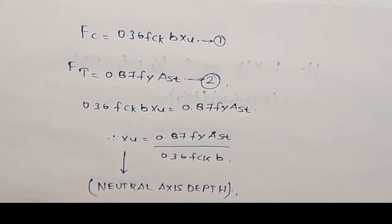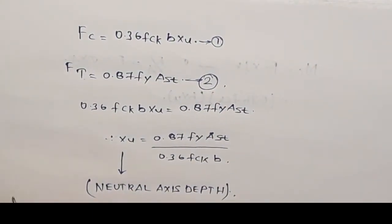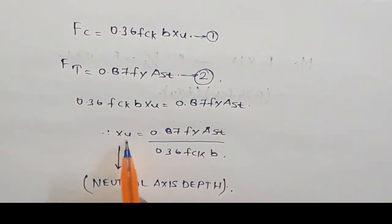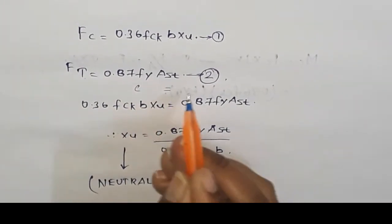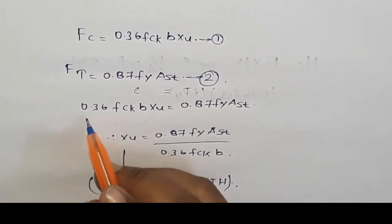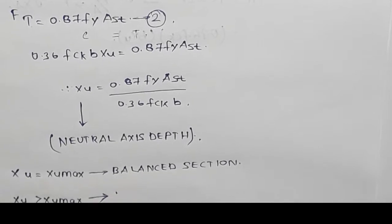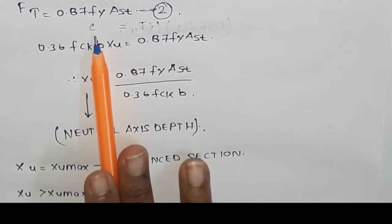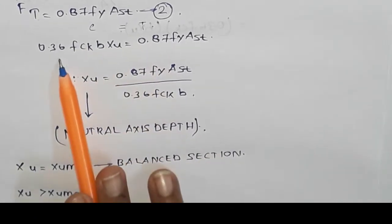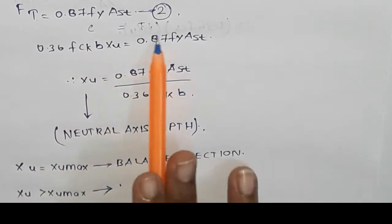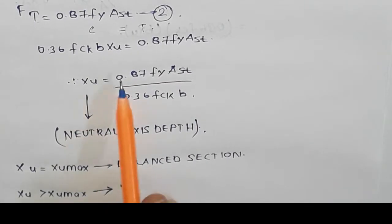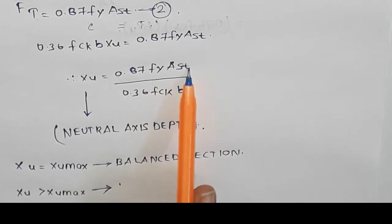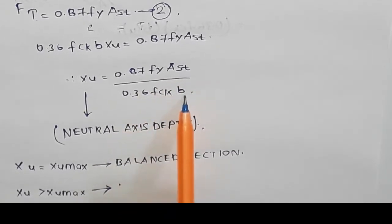The neutral axis does not experience either compressive or tensile forces. Therefore, to calculate XU, I equate both the compressive force and the tensile force. For calculation of neutral axis depth, forces in both the compression zone and tension zone are equated. After equating, we get the formula: XU = 0.87 FY × AST / (0.36 FCK × B).